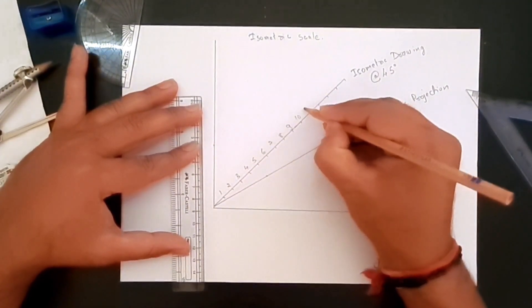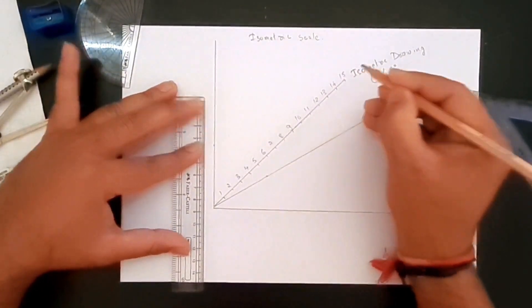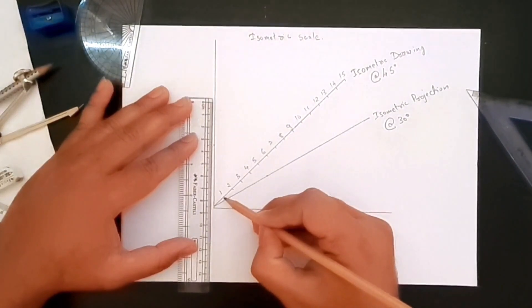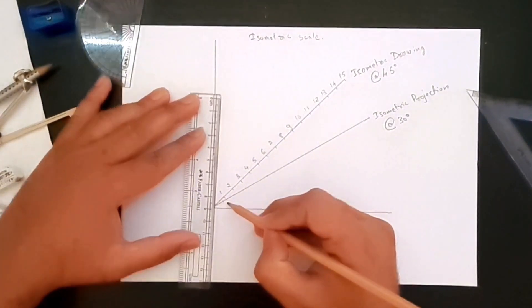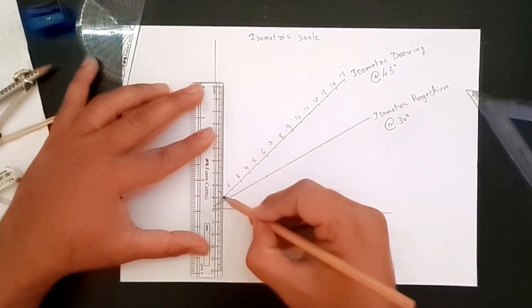We need to project all of these points vertically down. To do that we'll use a scale and make sure that all of these points are coming vertically down straight.